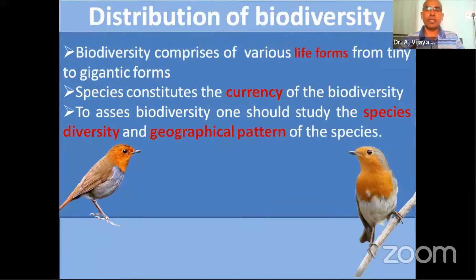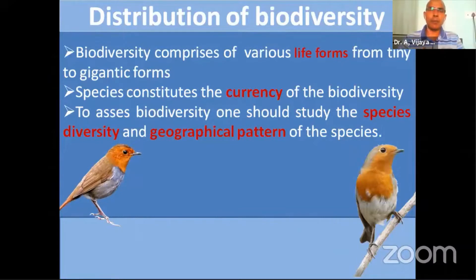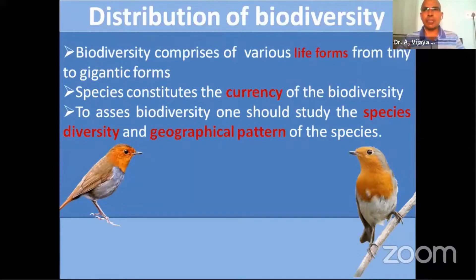Variation is always important — nature always goes for variation and does not want uniformity. Variation is the law of nature; it never allows uniformity. But nowadays we are destroying forests through deforestation and going for mono-species plantations like eucalyptus, cultivating only one type of plant. That is not good for nature at all and has a very bad impact on it.